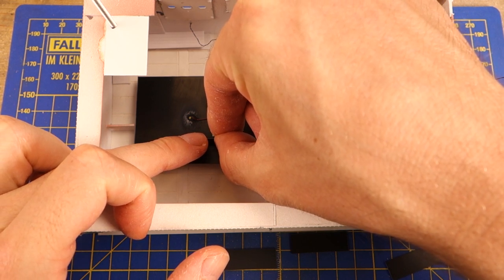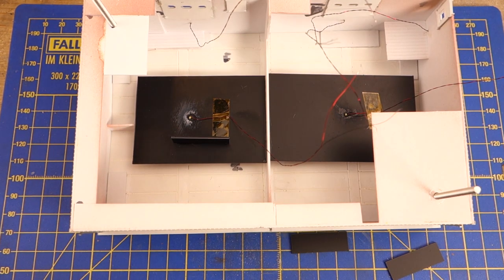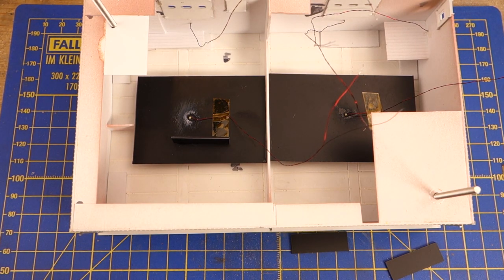For the interior lighting I mounted cold white LEDs into the ceiling. To prevent light bleed into the roof I cut pieces of 1mm black styrene and glued them into the roof.